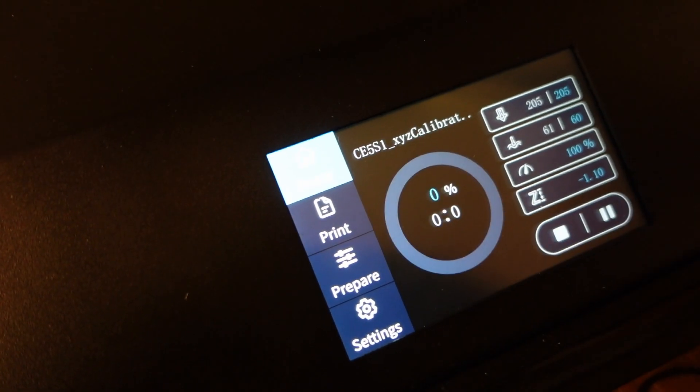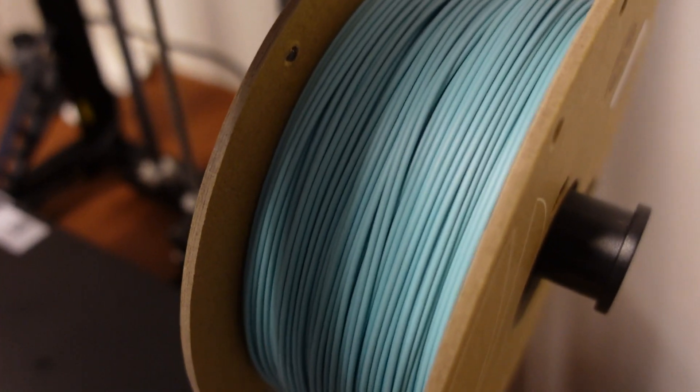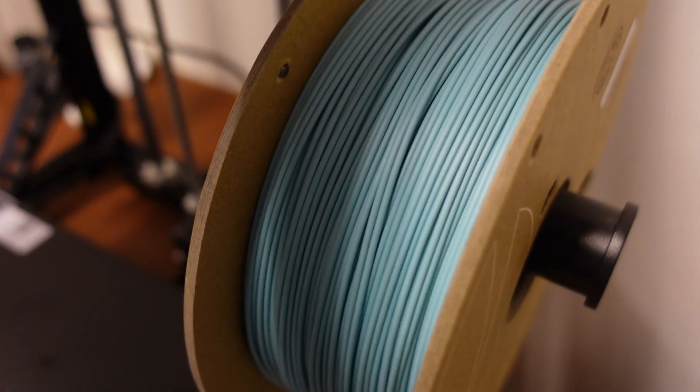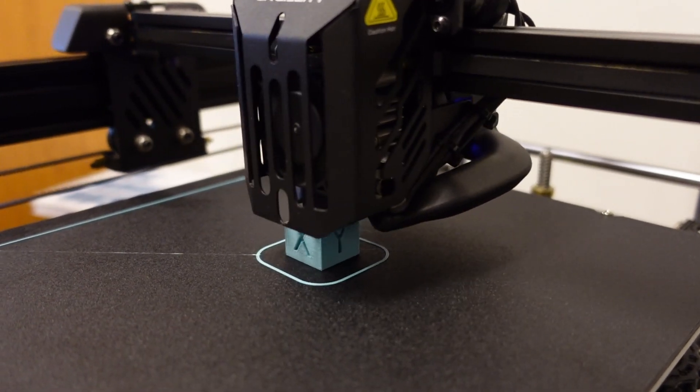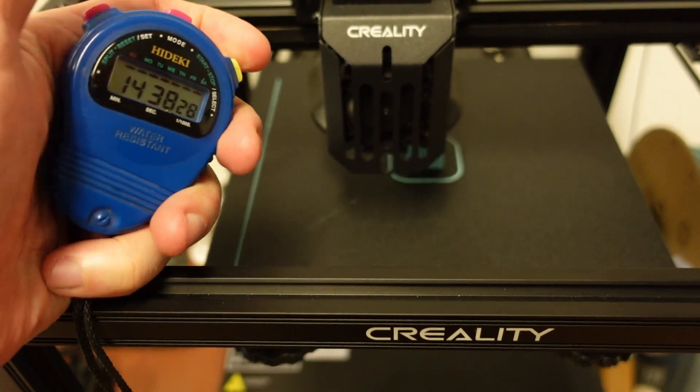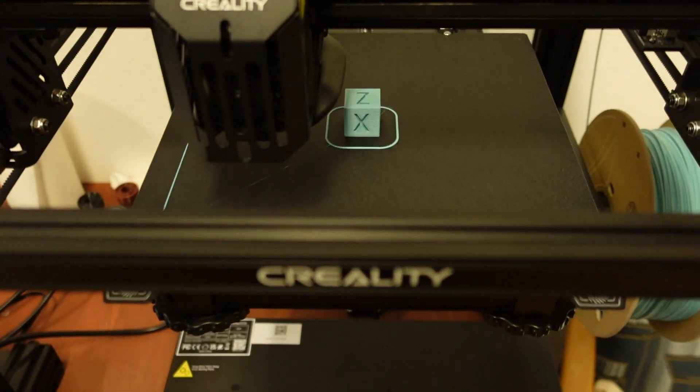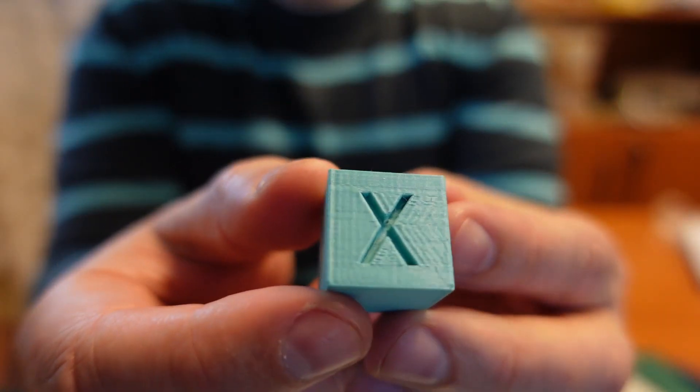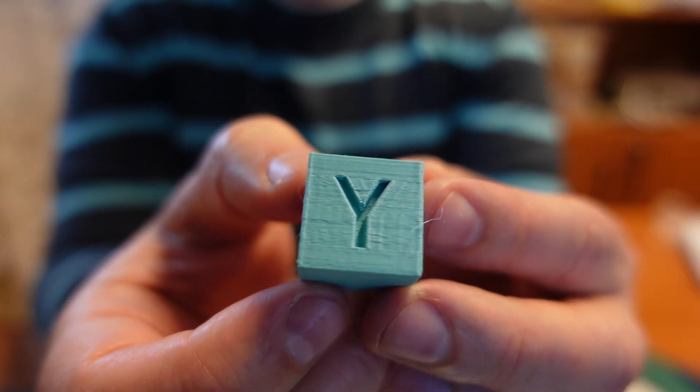The next printing is the calibration cube. I can see a lot of shaking even on the filament holder. This is again real time speed, approximately after 10 minutes maybe. 14 minutes 38 seconds is the printing time. Here again I can see a lot of ringing along the X and along the Y axis too.